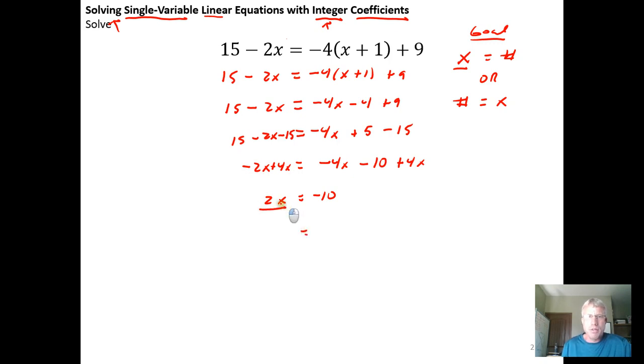And then here I have 2x's. I only want 1. I want the coefficient of 1 on this x. So I can either divide by 2 because 2 divided by 2 is 1. And that would mean I would need to do it on both sides. Or I could think of this a little bit differently. Here's a 2 or a 2 over 1. I'm going to multiply by its reciprocal 1 half. A half of 2 is 1. And that leaves me with 1x equals negative 10 times 1 half. Multiplying by 1 half is the same as dividing by 2.